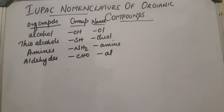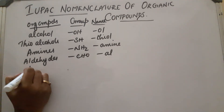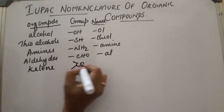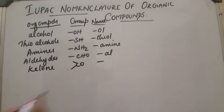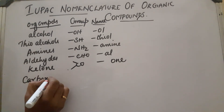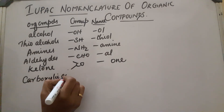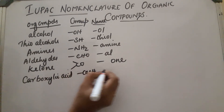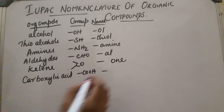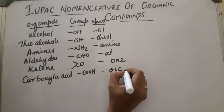Aldehydes have the CHO group and the suffix is 'al' — so ethane with a CHO group becomes ethanal. Ketones have the C=O group and the suffix is 'one.' For carboxylic acids, the acid group is COOH and the suffix is 'oic acid' — for example, ethanoic acid.